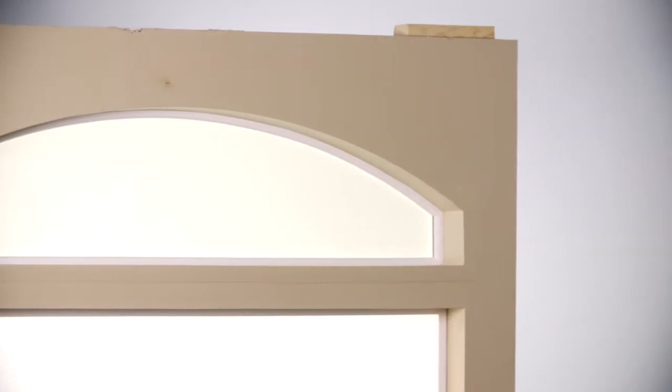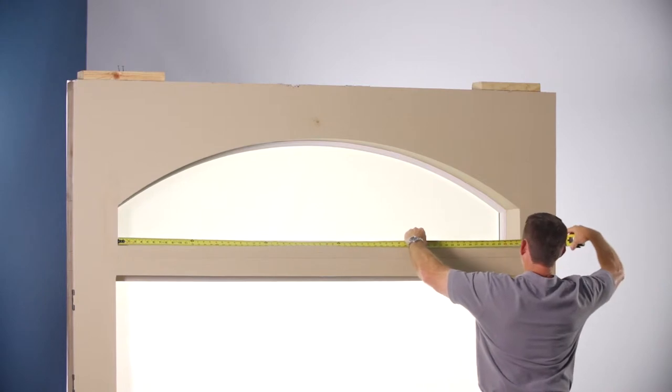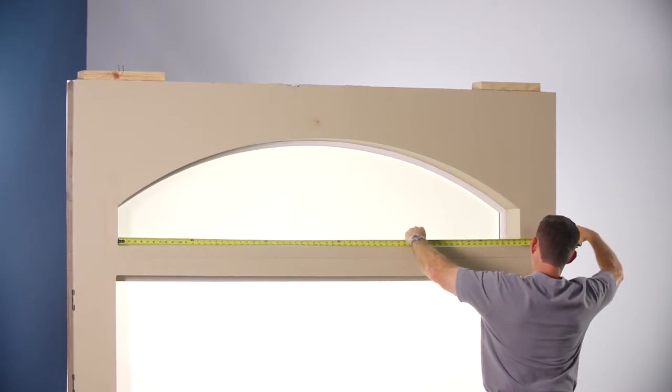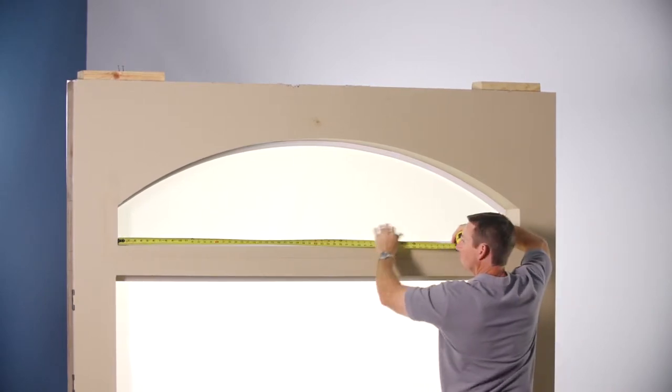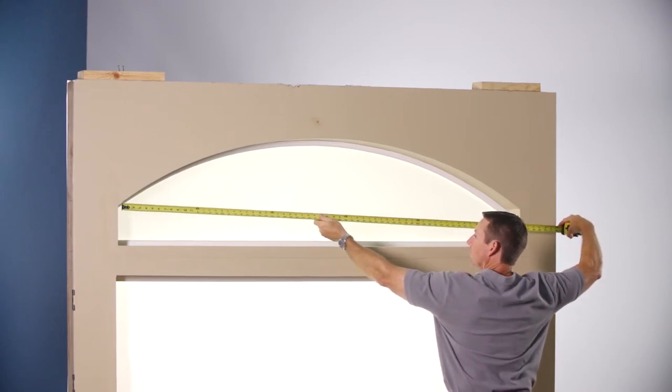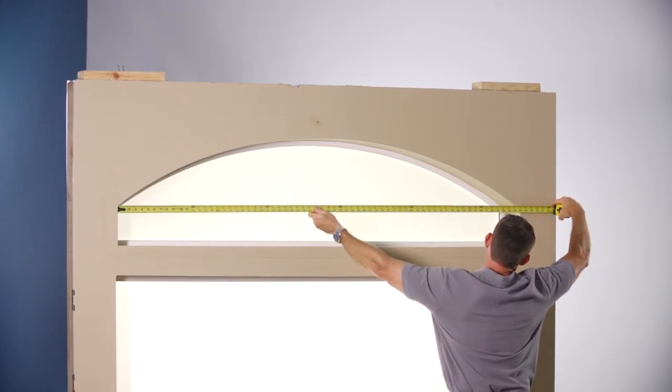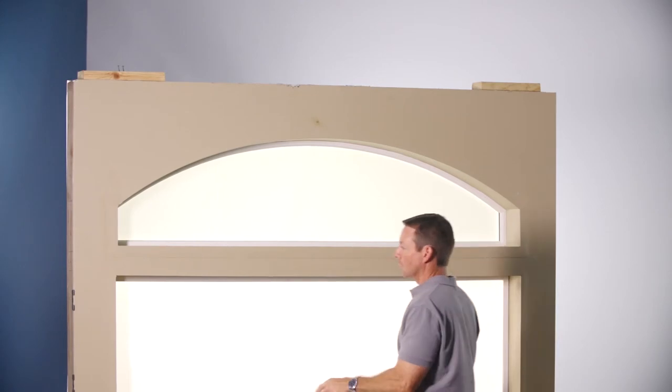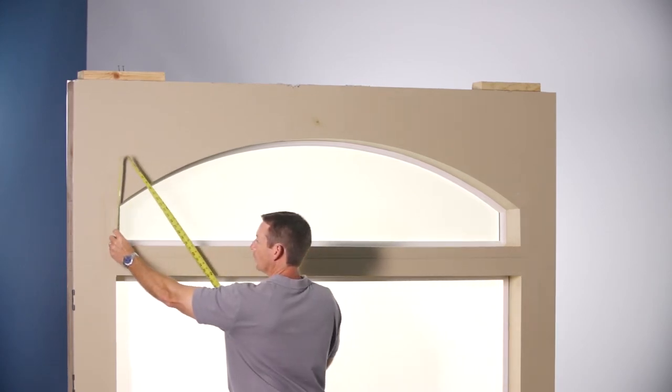The basic measuring approach is to first measure the window opening width in three places within the lower rectangular area of the opening: at the top, middle, and at the bottom, and record the narrowest width as your order width.